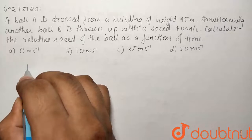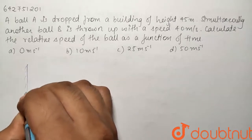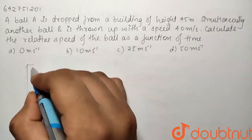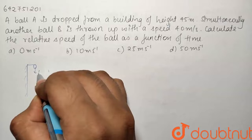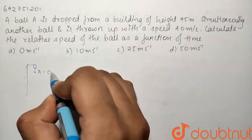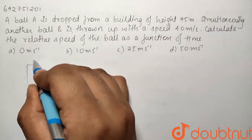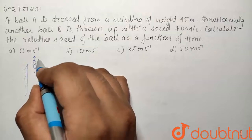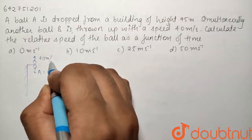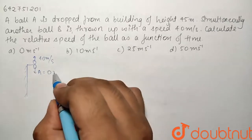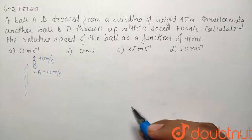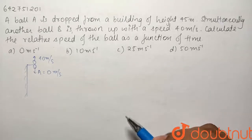So what we have is a tower. We are dropping a ball from here. So ball A is coming down with initial velocity equals to 0. And another ball B we have thrown up with a velocity of 40 meter per second. So we have to find out the time dependency of their relative velocities.